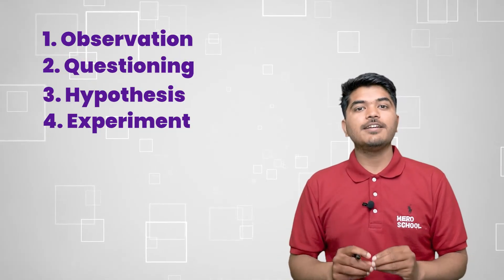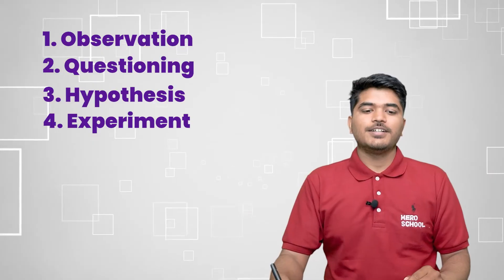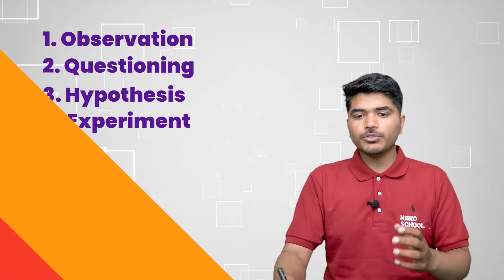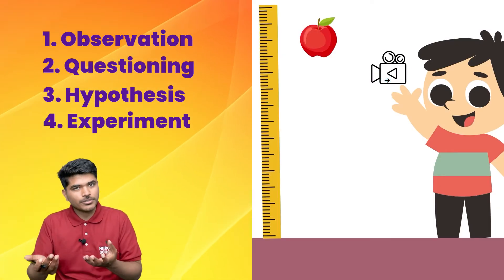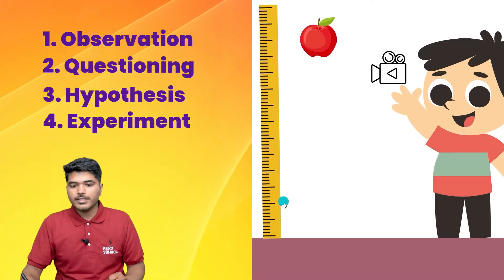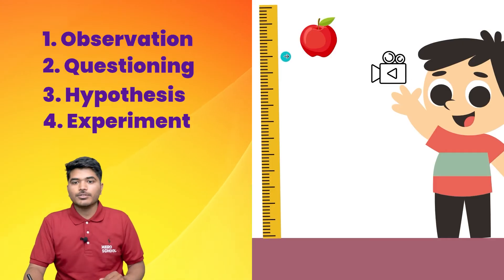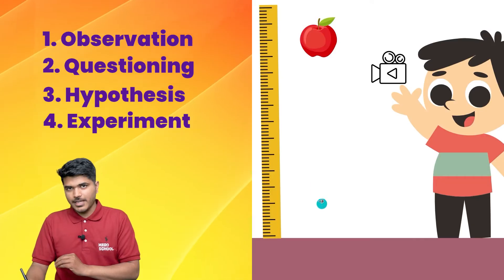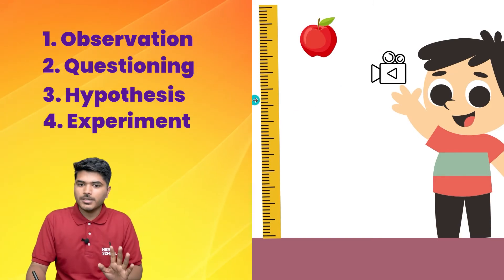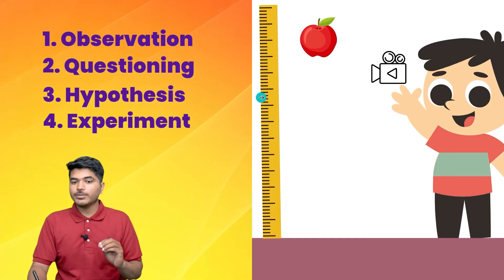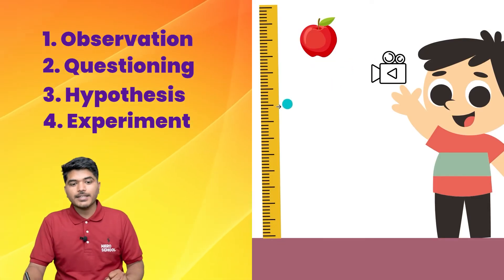So three steps so far: observe, question, and hypothesize — give a logical guess. Then we have experiment. You have to now design a well-defined experiment just to test your hypothesis. Suppose you design an experiment like this: you are going to drop the apple and record it with a video camera or your phone. You also get a scale — a meter stick — and hang it on the wall in the background, so you can see at different moments of time where the apple is and how fast it is falling. This is a proper experimental setup to check our hypothesis.